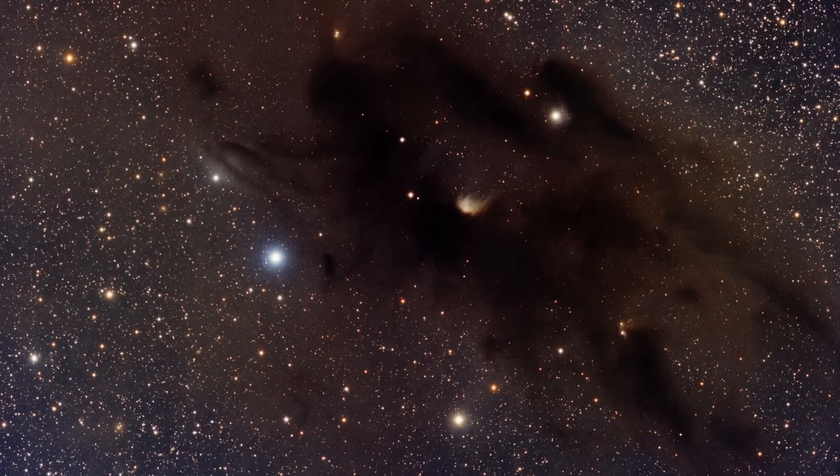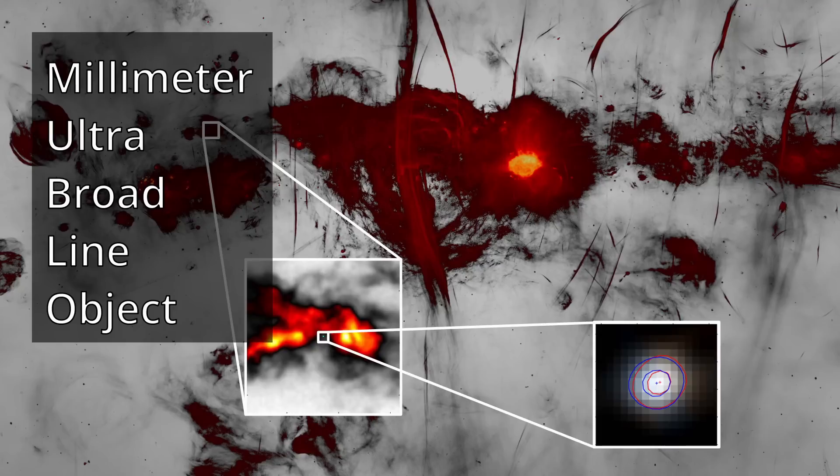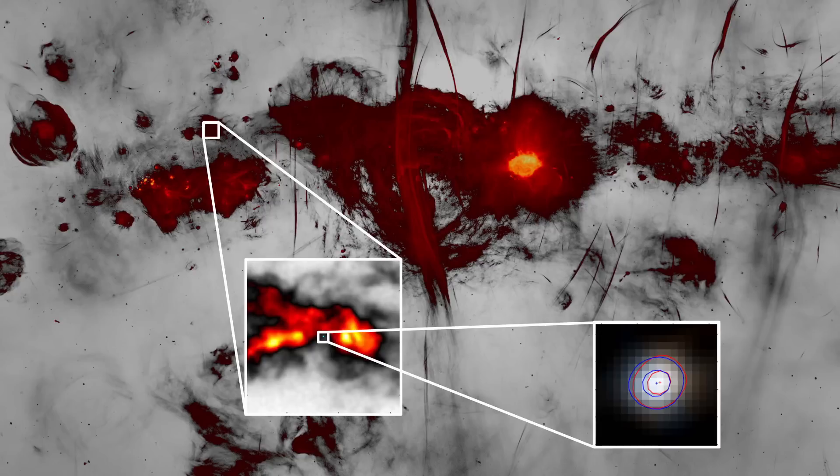This combination of emission and absorption provides a comprehensive view of molecular clouds. The recent observations of a millimeter ultra-broadline object within the central molecular zone have unveiled a celestial entity that deviates significantly from expected norms. Unlike typical molecular clouds, the MUBLO exhibits extraordinary characteristics in both its spectral emissions and physical properties.